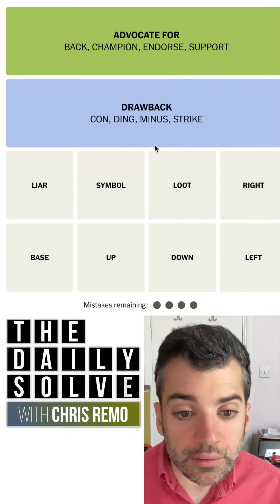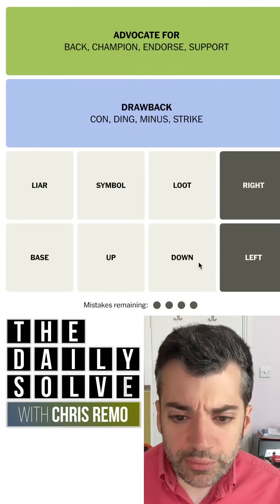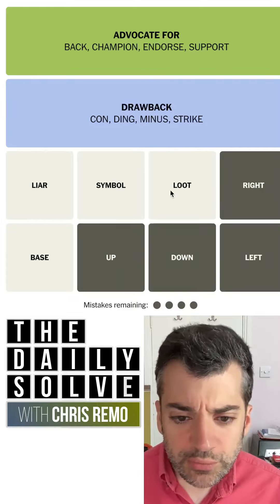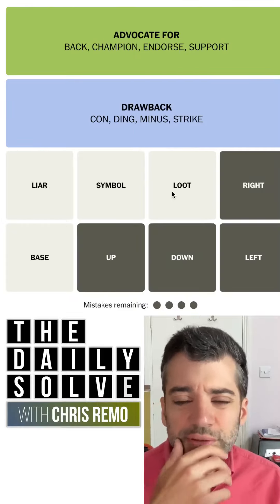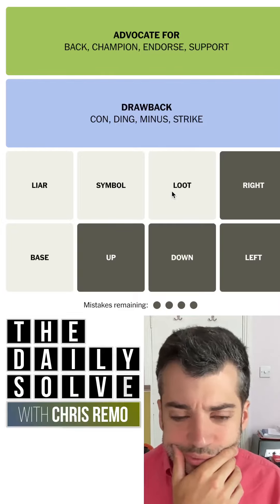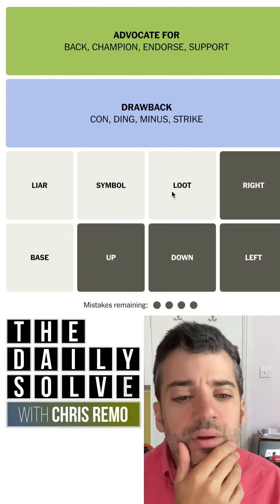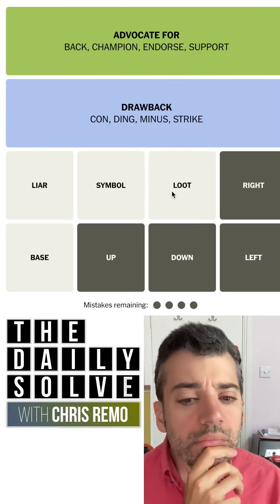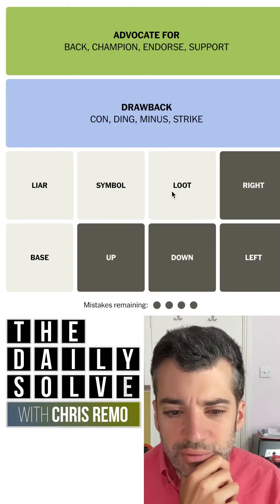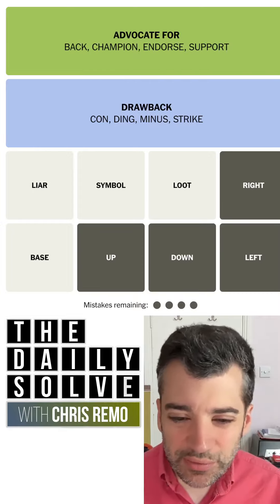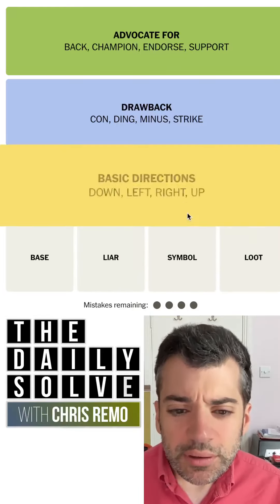Yes — drawback. Good. So if we do use these, what are these? Base, liar, symbol, loot. What on earth is that? I have no idea what this is. Something about tool? I don't quite get this. I think this is probably a category though. It is — basic directions. Yeah.